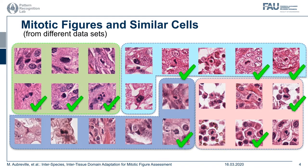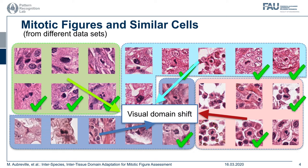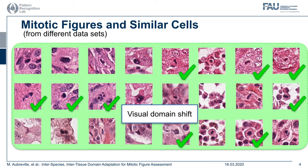We will refer to this as a visual domain shift. This domain shift might stand in our way if we want to have a truly generalizing solution. If we want to utilize those big datasets, we want our solution to be agnostic to the domain and only differentiate true mitotic figures from similarly looking cells. This solution would then be considered robust.